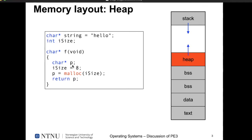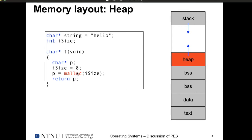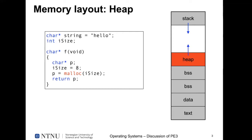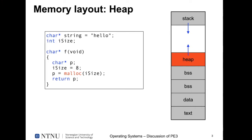Declaring a character pointer doesn't allocate any storage except for the pointer itself. If you need a string of size 8 including the terminating zero byte and want to dynamically allocate it, you can declare a pointer and an integer variable isize = 8, then call malloc passing isize as the parameter. malloc allocates 8 bytes, and on success returns a pointer to that newly allocated memory area.